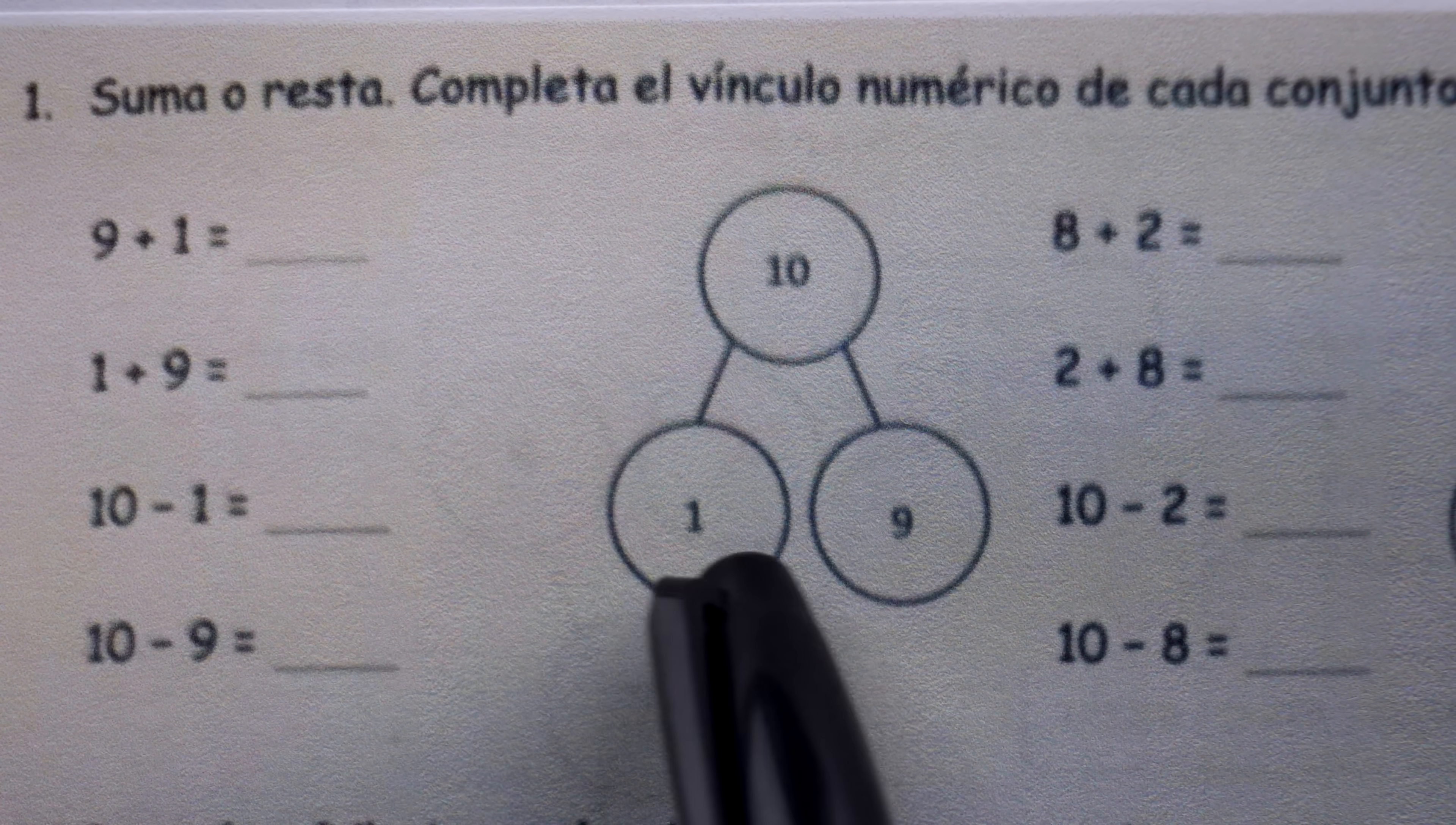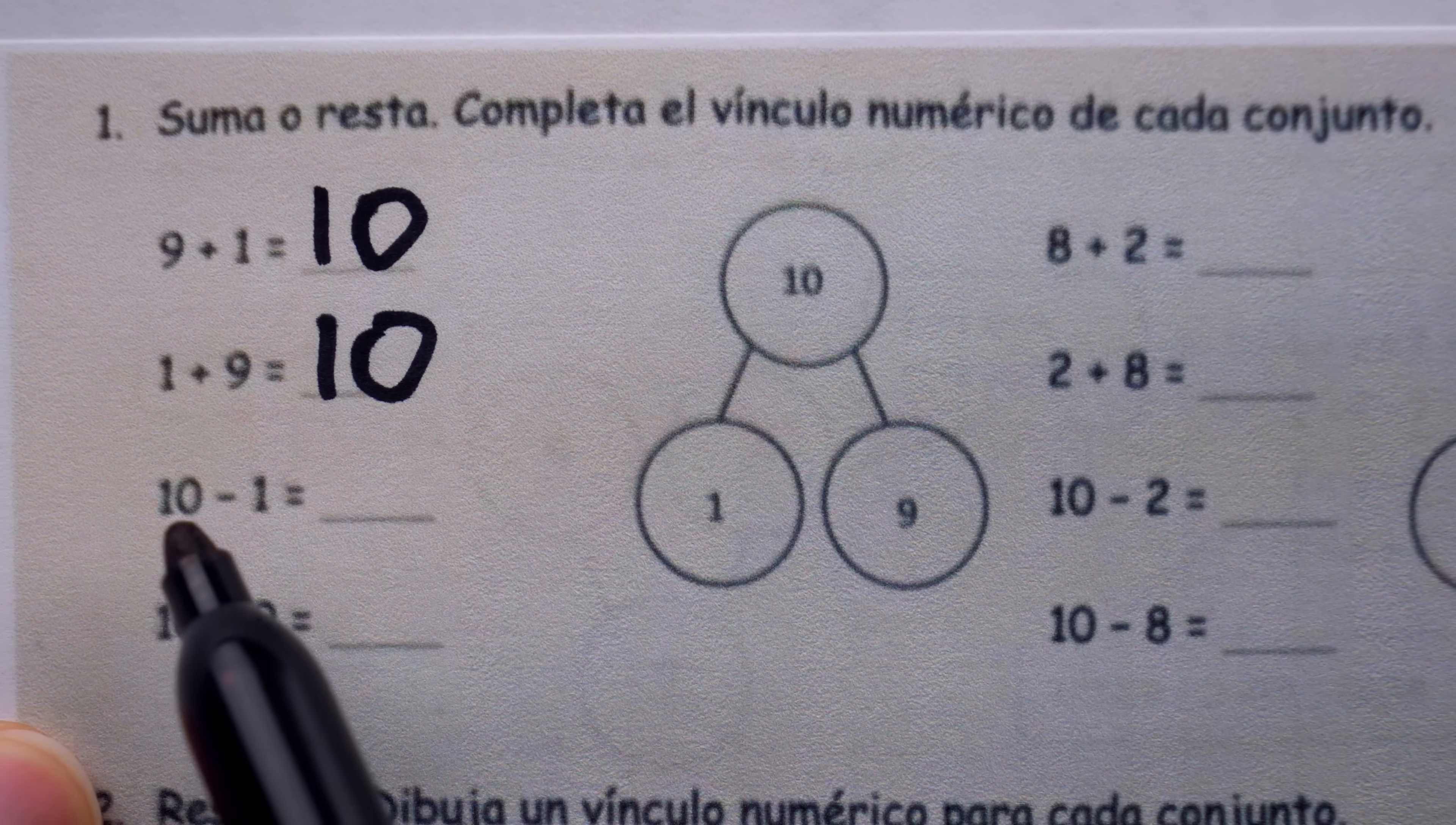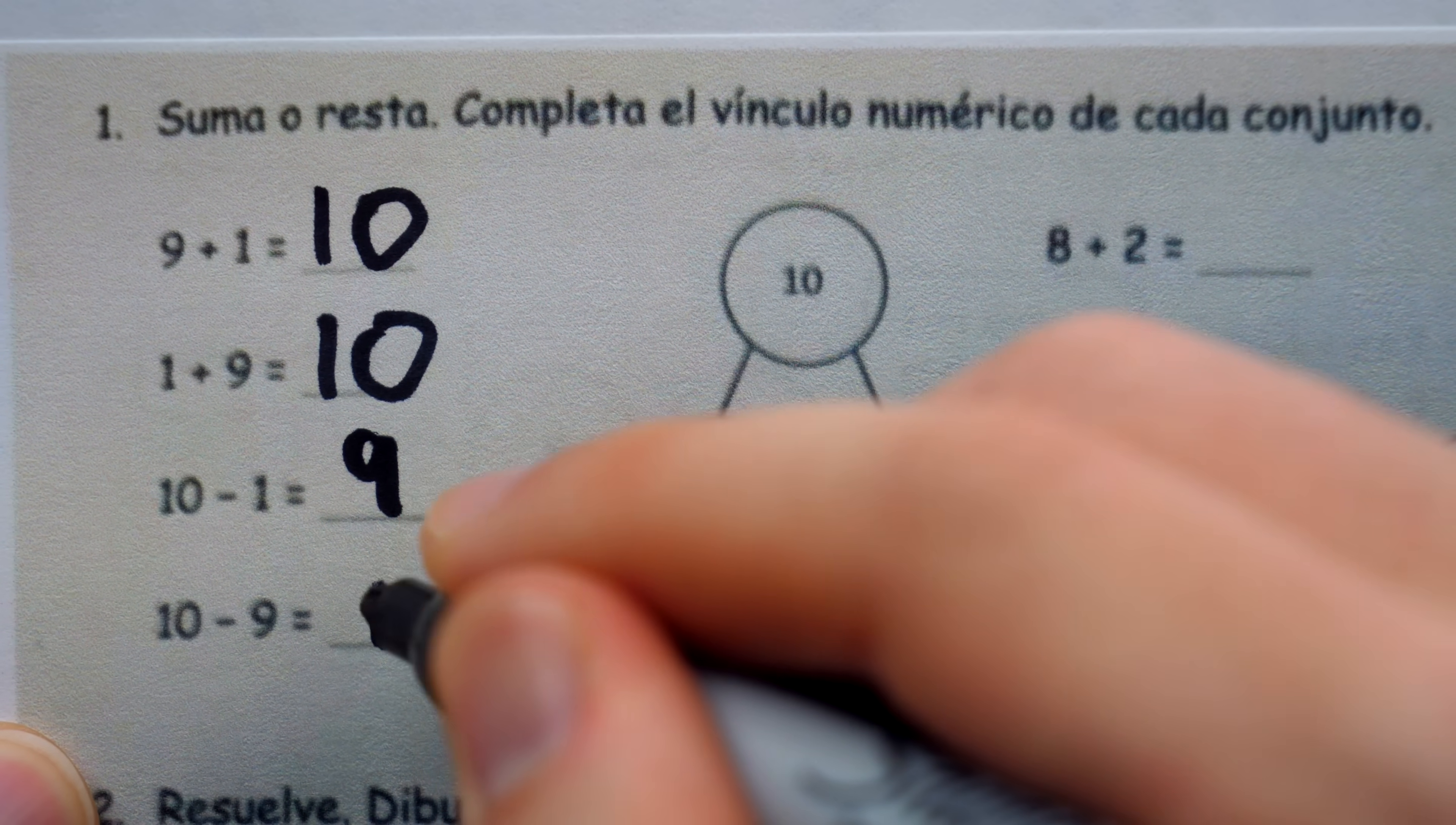The two numbers at the bottom add together to create the number at the top, and you can see there are equations here to show that connection. Of course, another hopeful takeaway here is that the student will realize the order of addition doesn't matter. And you can see the other two equations they're supposed to interpret from the diagram, which is that either number can be subtracted from the top number to create the remaining number. We could subtract one to get nine, we could subtract nine to get one.